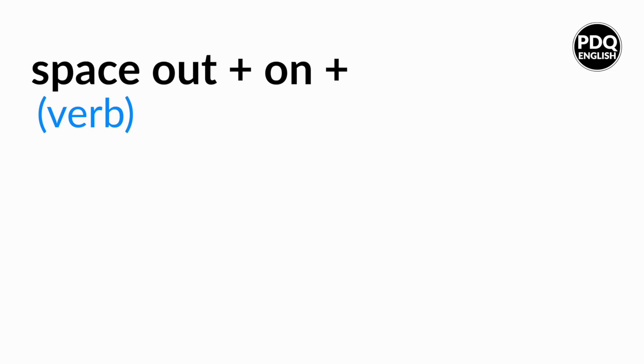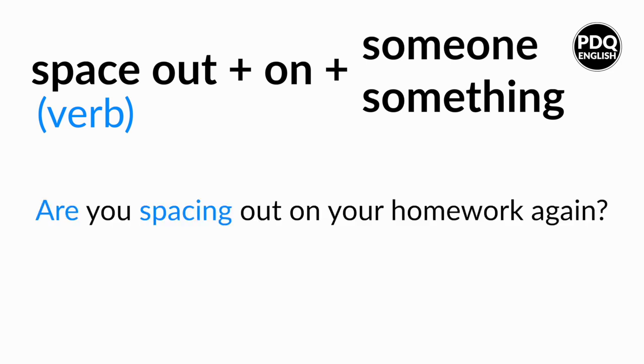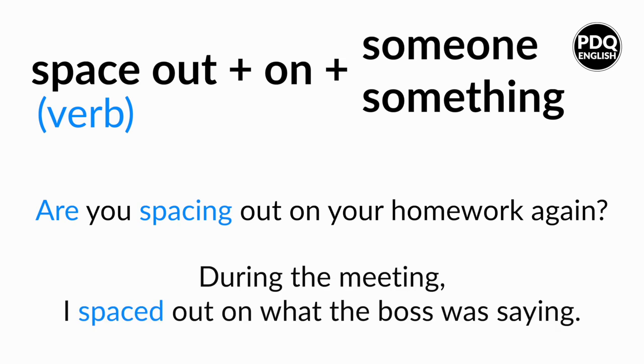You can use the word space as the verb to space out on something or someone. So you can change the verb space into different tenses. That's up to you. For example, are you spacing out on your homework again? Then, during the meeting I spaced out on what the boss was saying.